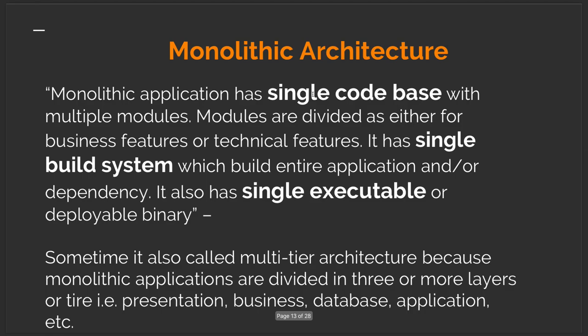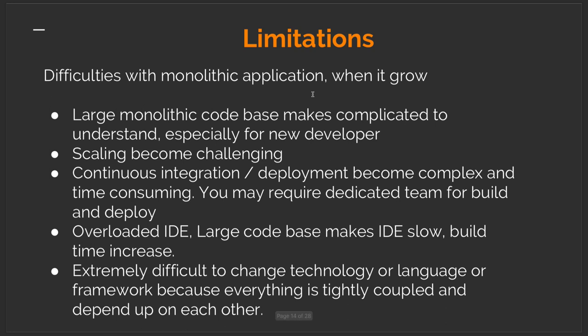Monolith architecture has a single codebase with multiple modules divided by business features. It has a single executable deployable — a WAR file, EAR file, or a Node.js bootstrap file. If something goes wrong — an unhandled exception or a 500 API error — the server goes down and brings down the whole application, since presentation, business logic, and database layers are all together. Scaling becomes challenging, the IDE becomes overloaded with code, and new developers take more time to understand it. There's always a fear of touching existing code without full impact assessment.